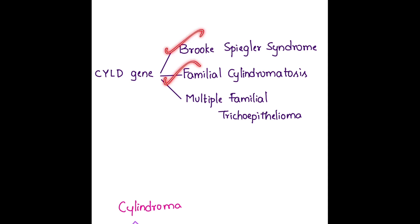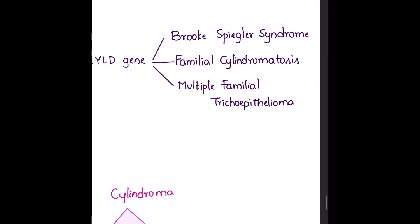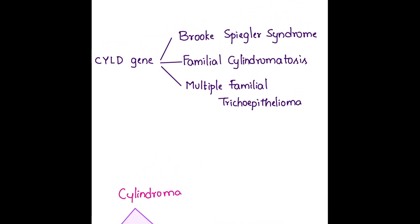In the above case, if a family history of cylindromas was positive, then the diagnosis could have been either Brooks-Spiegler syndrome or familial cylindromatosis. However, if the patient had trichoepithelioma and spiradenoma apart from cylindroma, then the diagnosis would be in favor of Brooks-Spiegler syndrome. If the patient had positive family history and only cylindromas, the diagnosis could have changed to familial cylindromatosis.